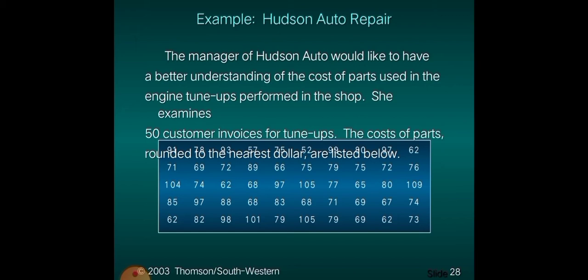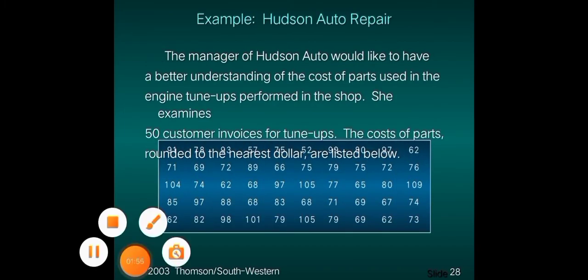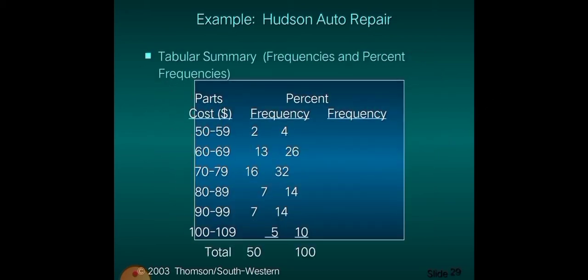How are we going to compute the frequency based on the class, and how are we going to compute the class interval? First, we need to compute the frequency for the cost of parts. The first thing to do is determine or decide the number of classes. In our Hudson Auto Repair example, the manager concluded that there must be six classes, from 50 to 59 up to 100 to 109.